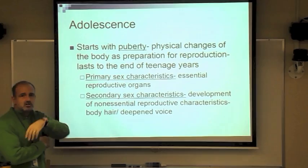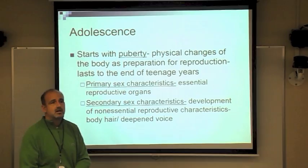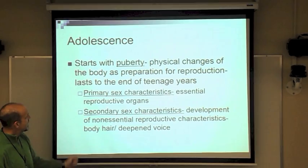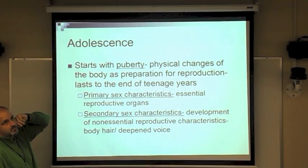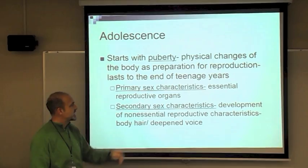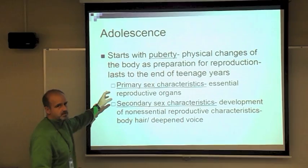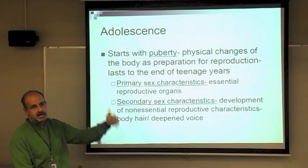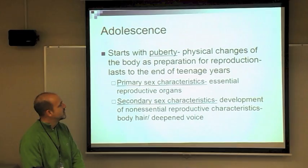Adolescence ties to both Erikson's identity vs. role confusion stage and Piaget's formal operational stage, featuring personal fable and imaginary audience. Puberty refers to physical aspects of adolescence — changes as the body prepares for reproduction. Primary sex characteristics are essential reproductive organs. Secondary sex characteristics are non-essential reproductive developments — body hair, body odor, deepened voice, and facial hair for males.